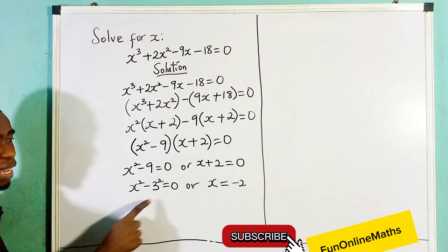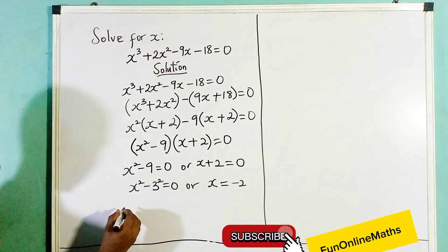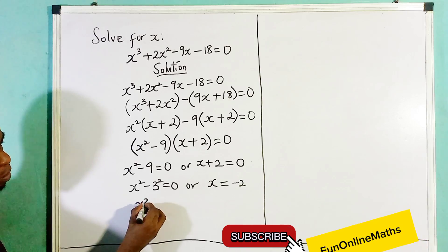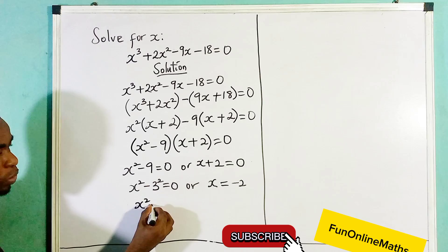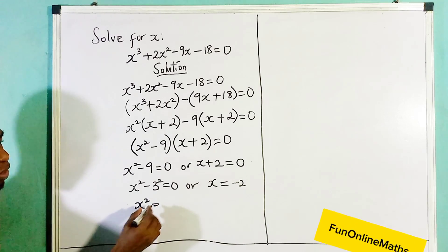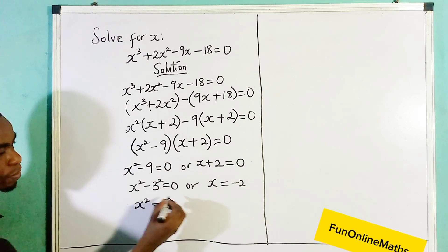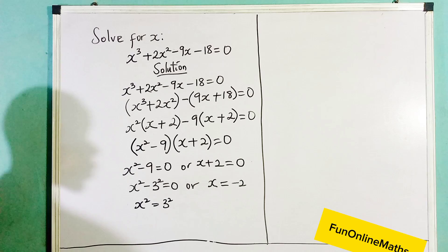While for this side, x², move 3² to the right hand side. Minus becomes positive so it will be zero plus 3². So x² equals to 3². Take the square root of both sides.